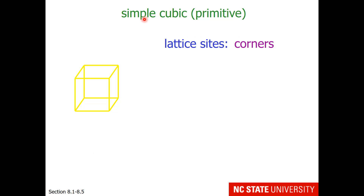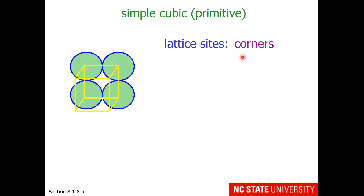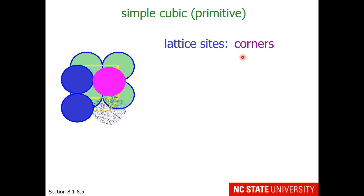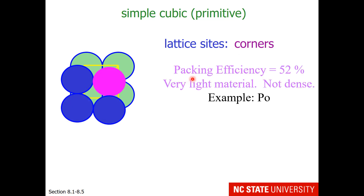We'll start with a simple cubic cell, also known as primitive. The lattice sites are on the corners, so let me draw the atoms — one through eight, all on corners. The packing efficiency of this type of unit cell is 52%, meaning only 52% of the volume of this unit cell is occupied by atoms. The remaining portion is empty space, so this is typically a very light material that is not very dense.